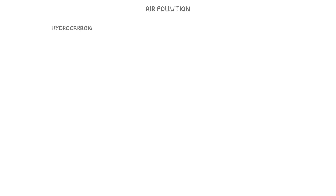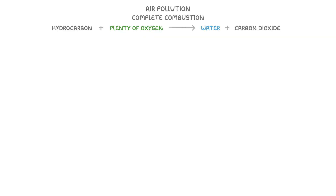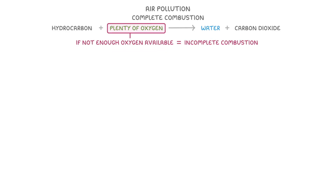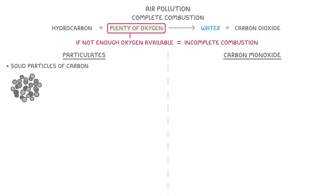Whenever a hydrocarbon burns in plenty of oxygen, and so burns completely, we call the process complete combustion, and the only products we should get are water and carbon dioxide. However, when there's not enough oxygen available, we instead get incomplete combustion, which can release carbon monoxide and particulates, which are solid particles of carbon that we call soot.